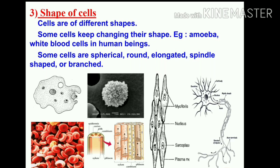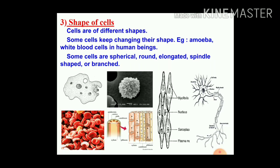Generally, cells are round, spherical, or elongated. Some cells are long and pointed at both ends, exhibiting a spindle shape. Some, like the nerve cell or neuron, are branch-like. The nerve cell receives and transfers messages from the brain to each and every part of the body, helping to control and coordinate the working of different parts. The cell membrane encloses the components of the cell and provides its shape. In plant cells, a cell wall provides additional rigidity. Bacterial cells also have a cell wall.